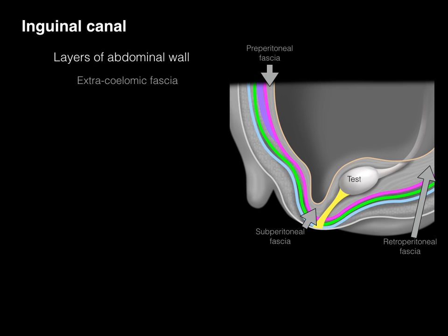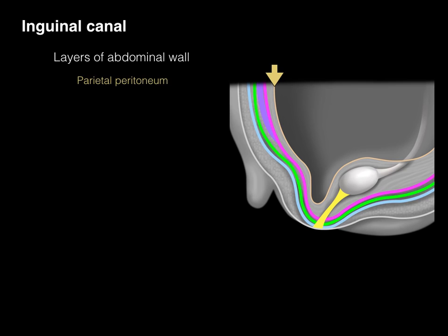The testis is located within this extracoelomic fascial space. The gubernaculum testis is a connective tissue structure that pulls the testis down from the retroperitoneal area to the subperitoneal area, projecting through and taking all layers of the abdominal wall to make the scrotum. I'll use the term extraperitoneal fascia and space to describe that fascial location of the testis. And finally, there's the parietal peritoneum — that coelomic sac, mesothelium — that lines the internal wall of the abdominal cavity.